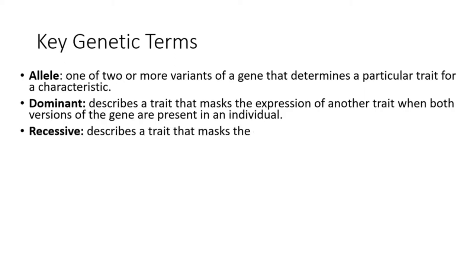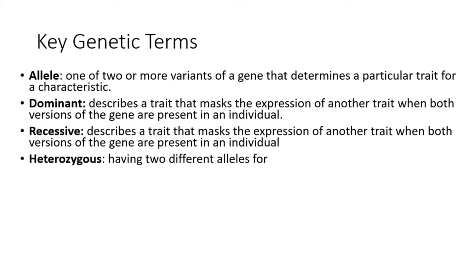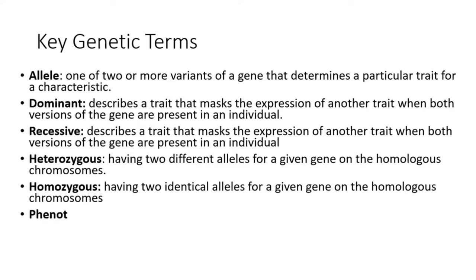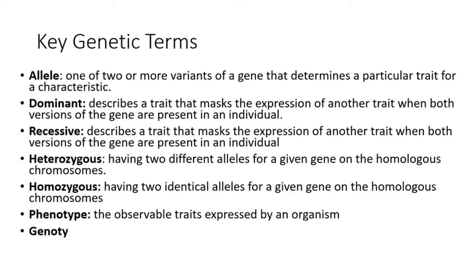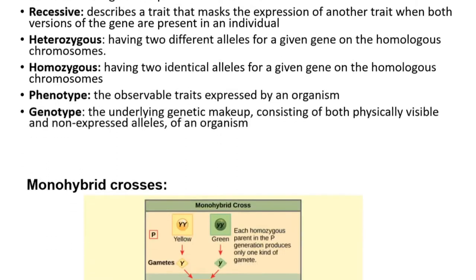Recessive describes a trait whose expression is masked by a dominant trait when both versions of the gene are present in an individual. Heterozygous means having two different alleles for a given gene on the homologous chromosomes. Homozygous means having two identical alleles for a given gene on the homologous chromosomes. Phenotype is the observable traits expressed by an organism. Genotype is the underlying genetic makeup consisting of both physically visible and non-expressed alleles of an organism.